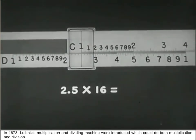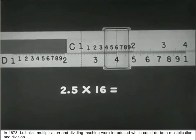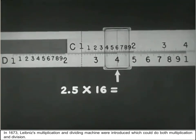In 1673, Leibniz's multiplication and dividing machine was introduced which could do both multiplication and division.